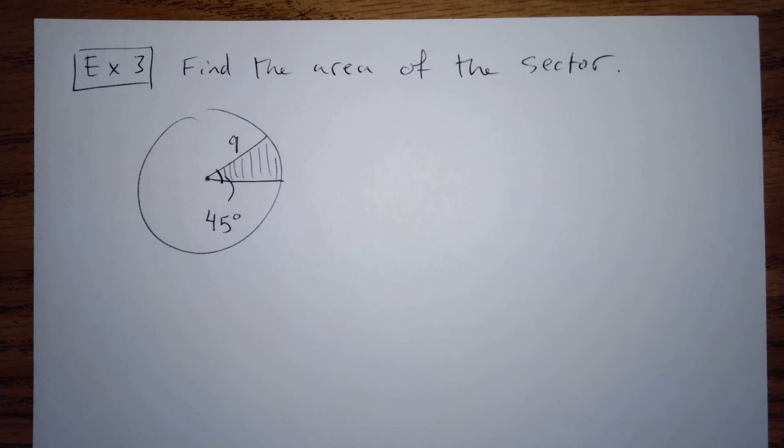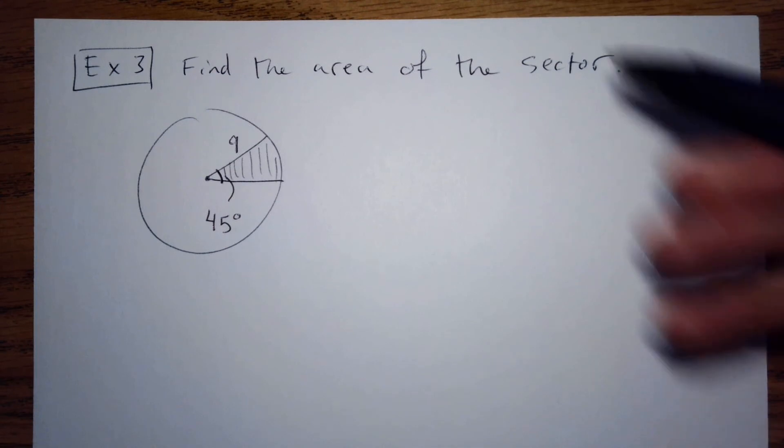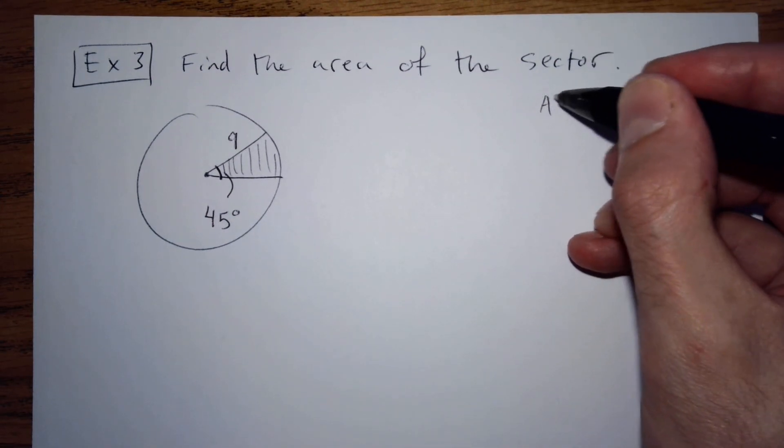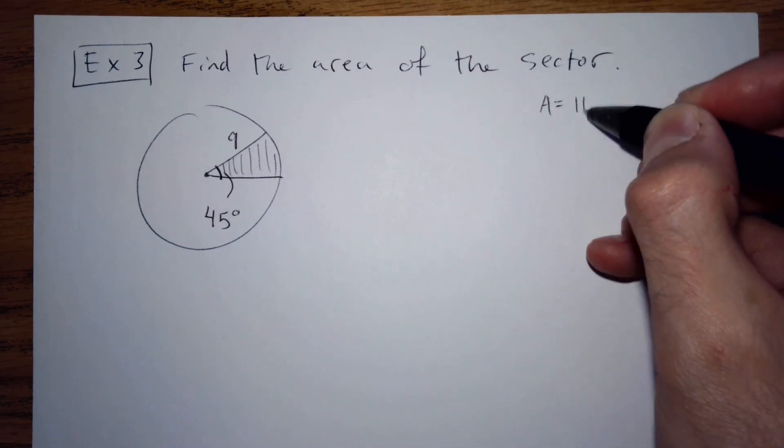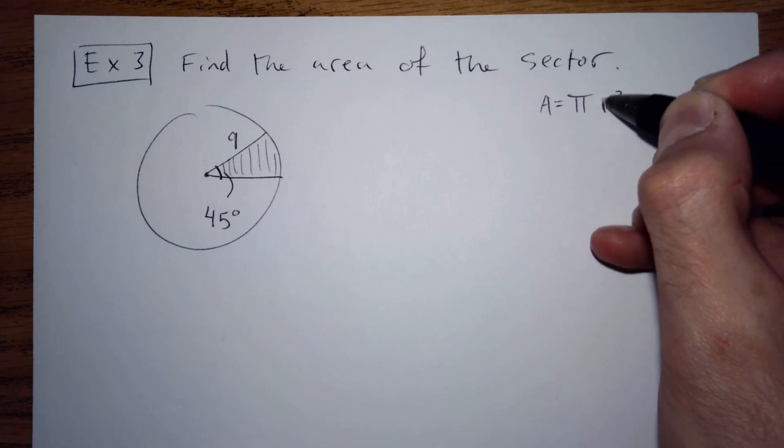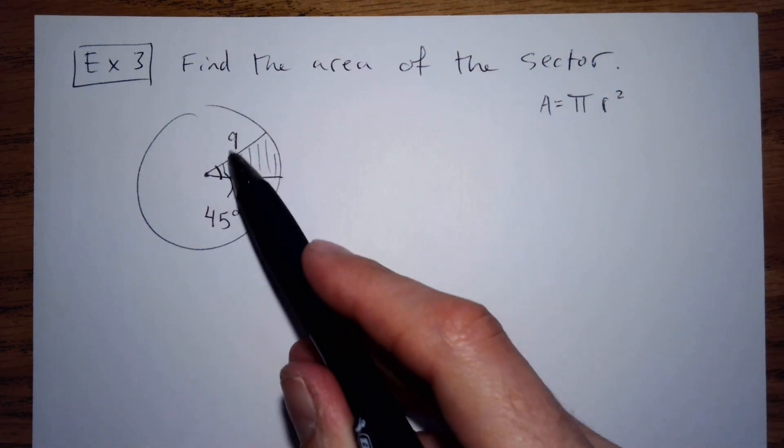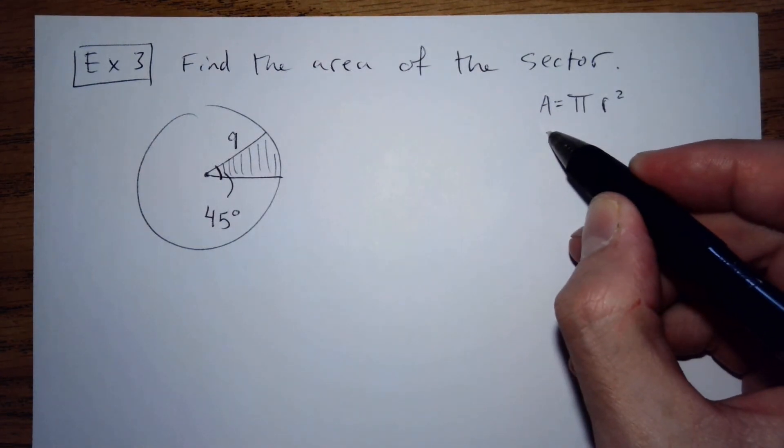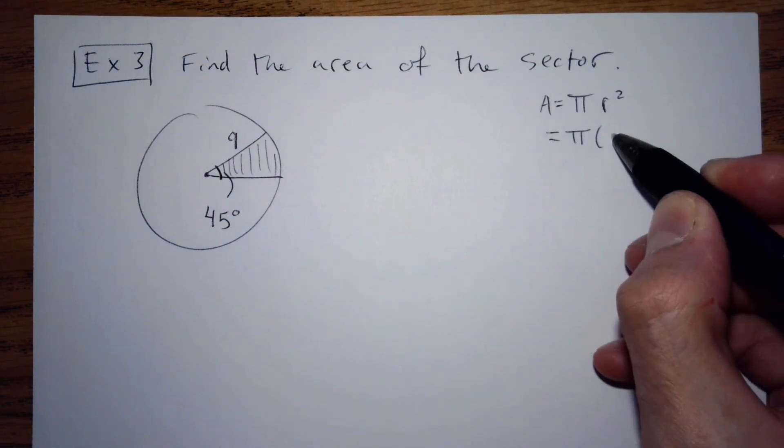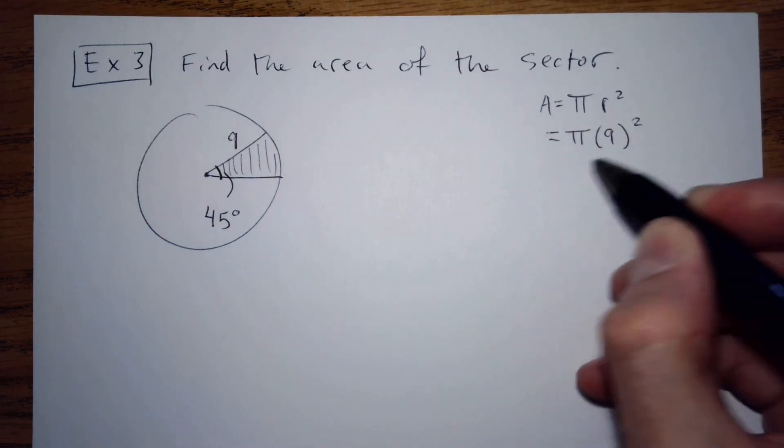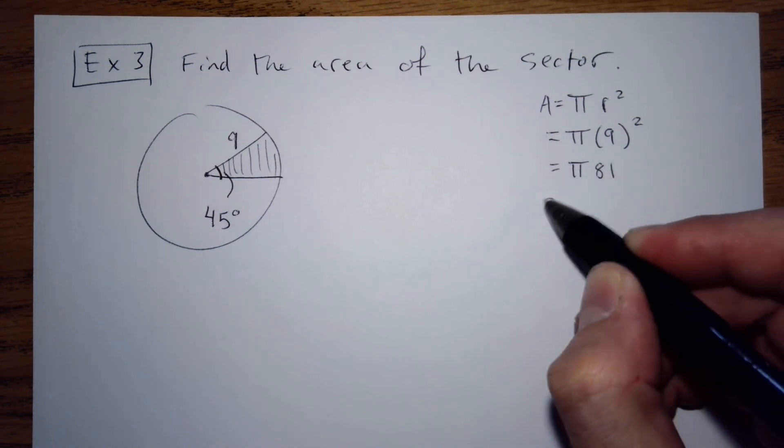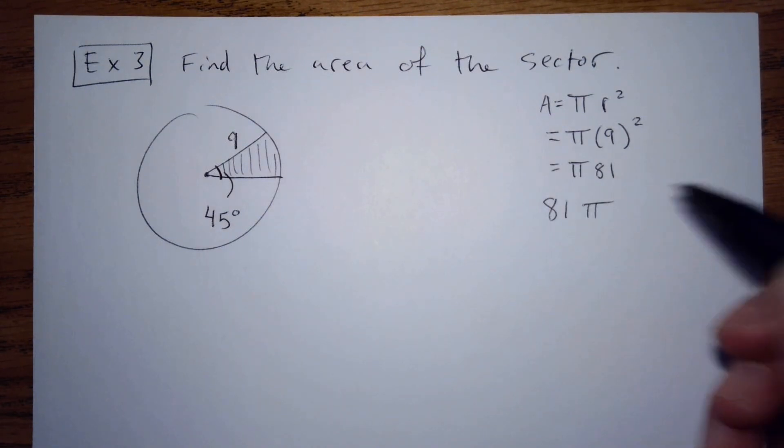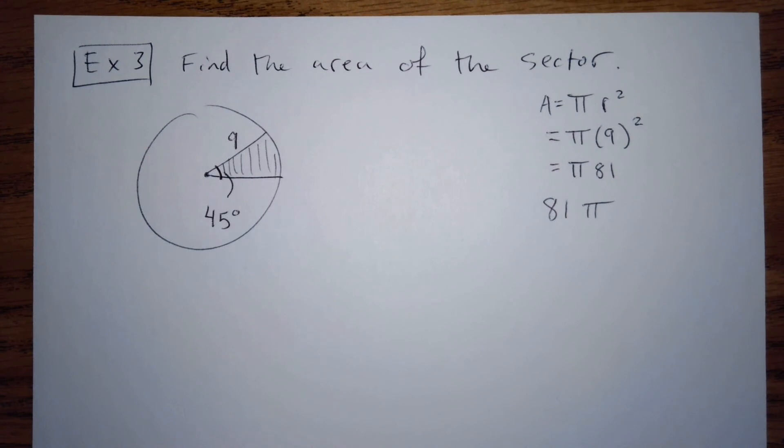And we can calculate the area of the entire circle by using pi r squared. And in this case, r is 9. So the area will equal pi times 9 squared, which is pi times 81 or 81 pi. But that's for the entire circle. We don't want the entire circle.